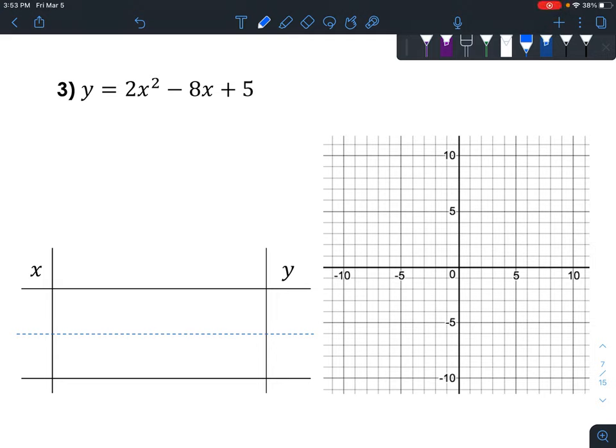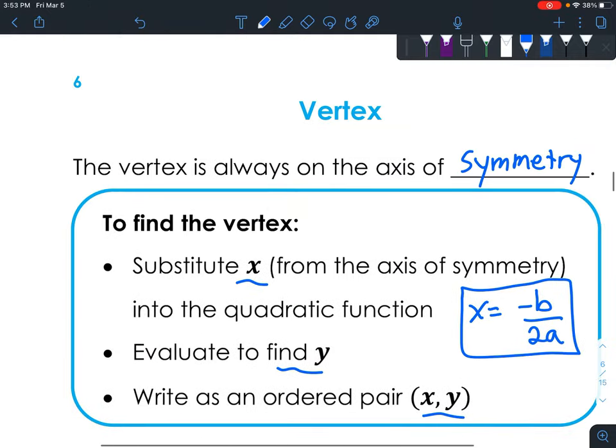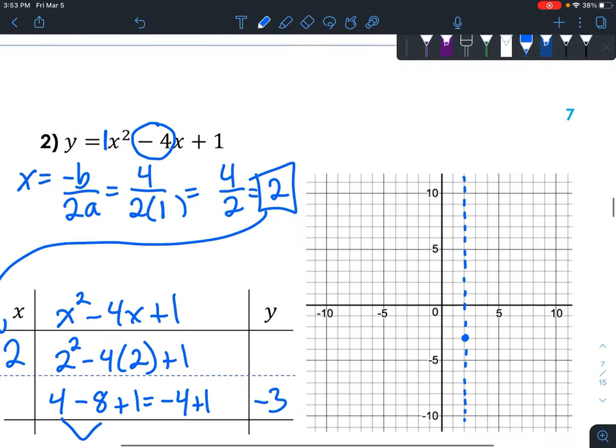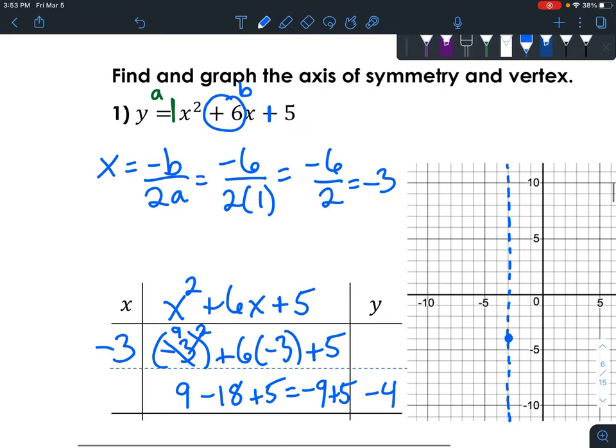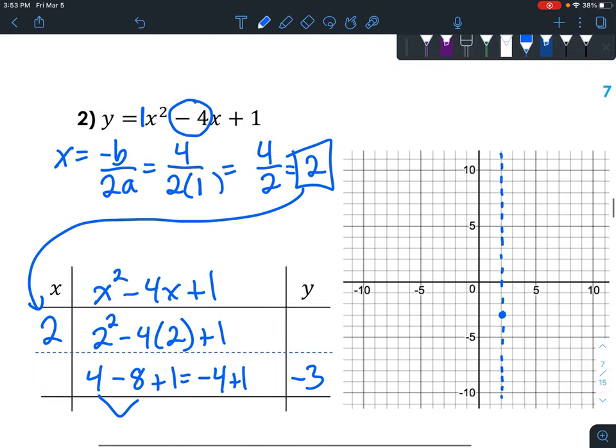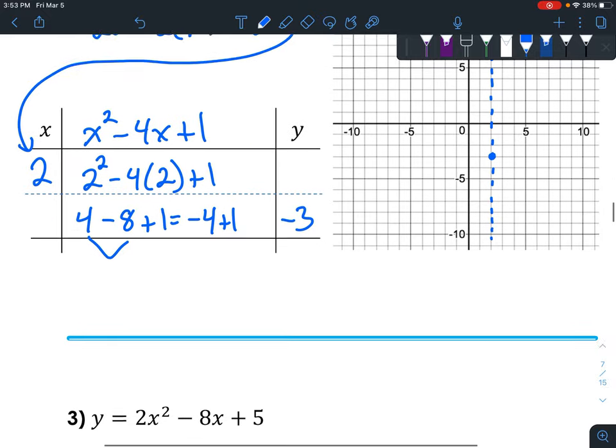Hello, today we're calculating the vertex and the axis of symmetry again, and we're continuing from this lesson. So you'll notice on numbers 1 and 2, there is only a 1 in front of the x squared, which makes the calculations just a bit more simple.